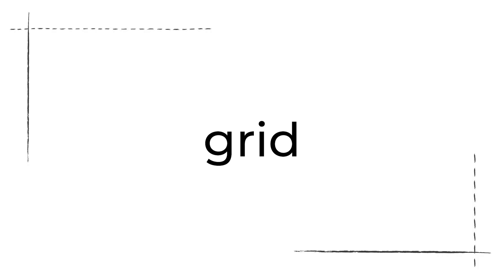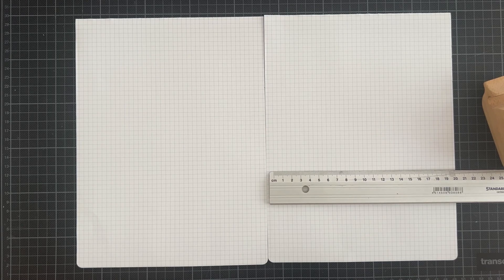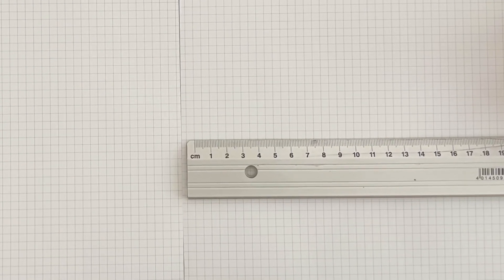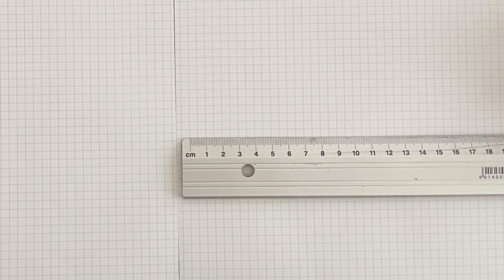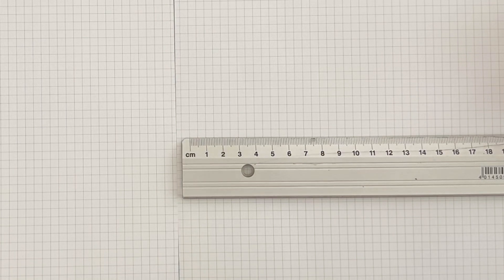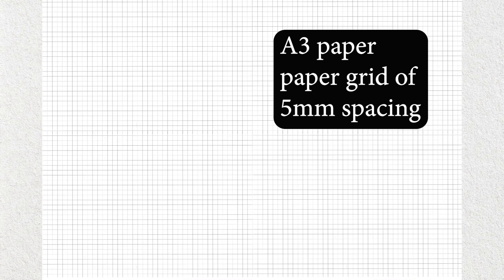Let's talk about grid. To help you work in scale, you will need a grid. If you work with normal graph paper, the grid lines are spaced 5mm apart, which means that two of your squares make up 1cm on your paper. Remember that — I'll come back to it when I talk about scale. I have created the same grid for my A3 paper in Procreate so you are able to follow along.